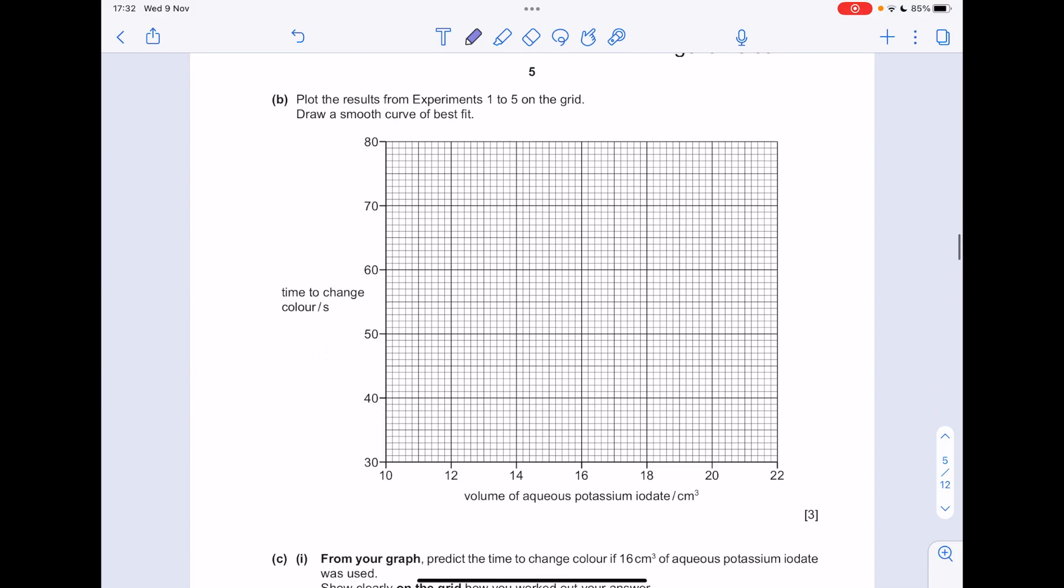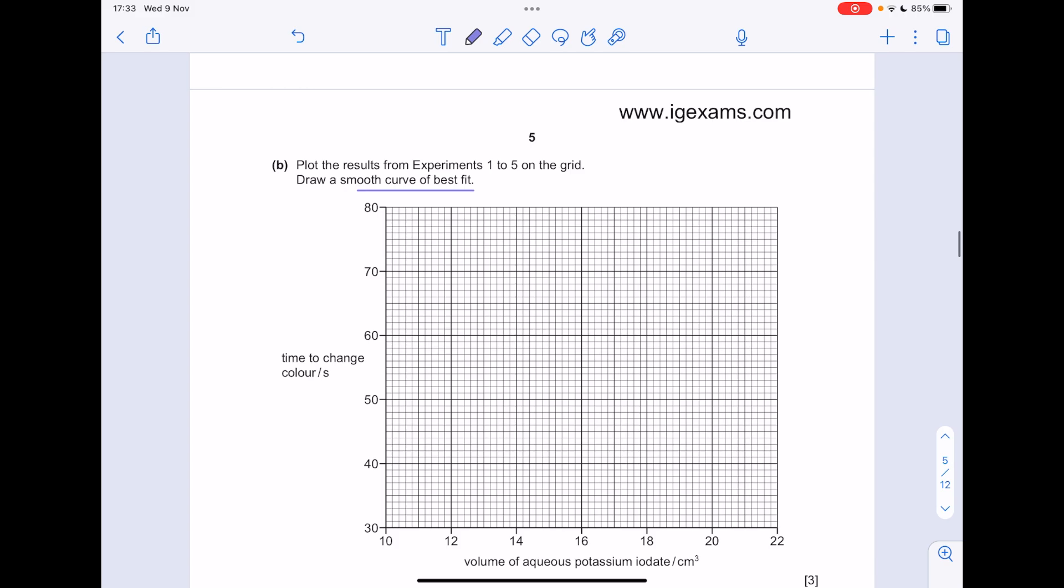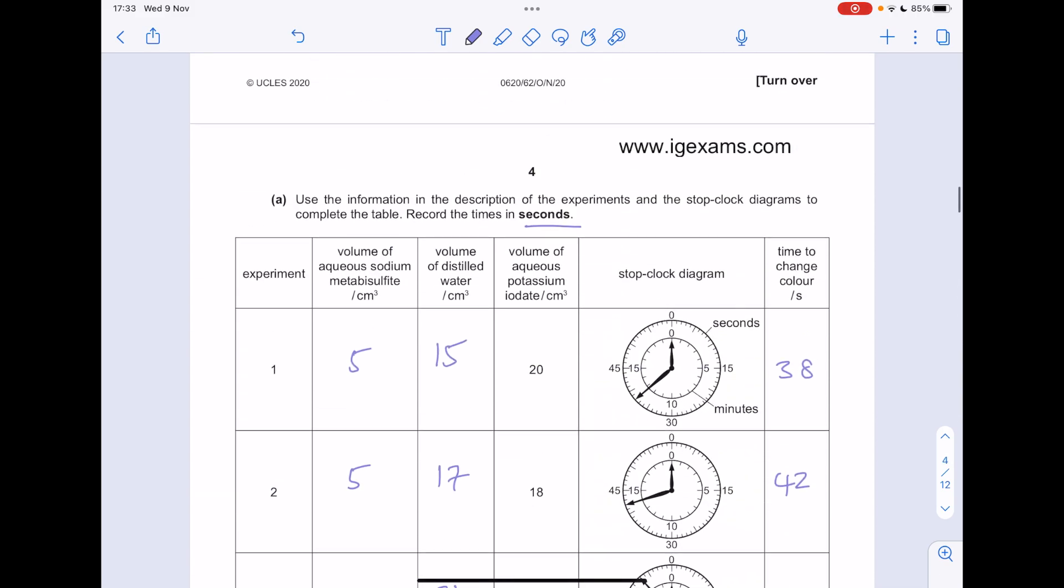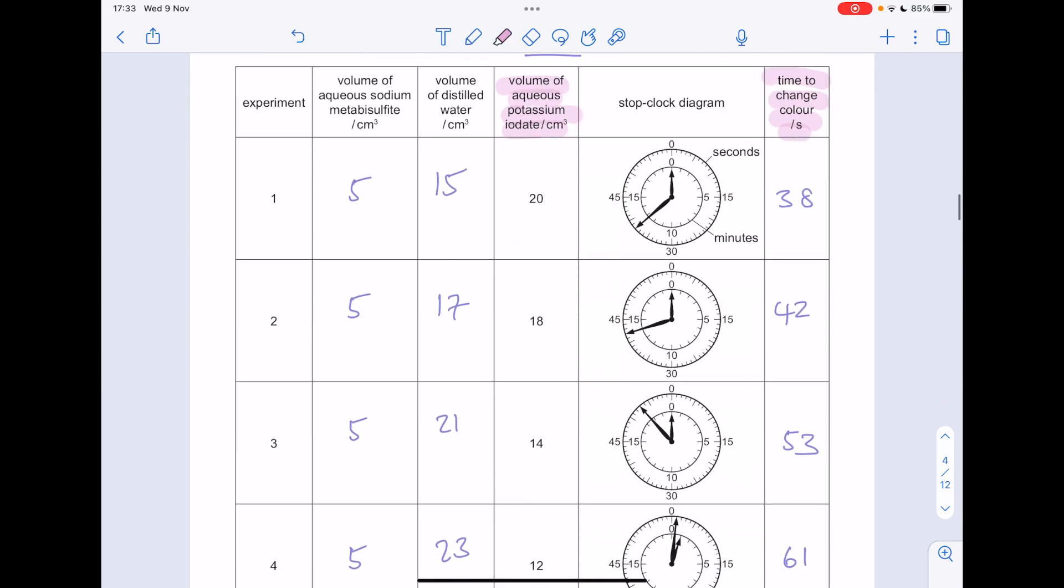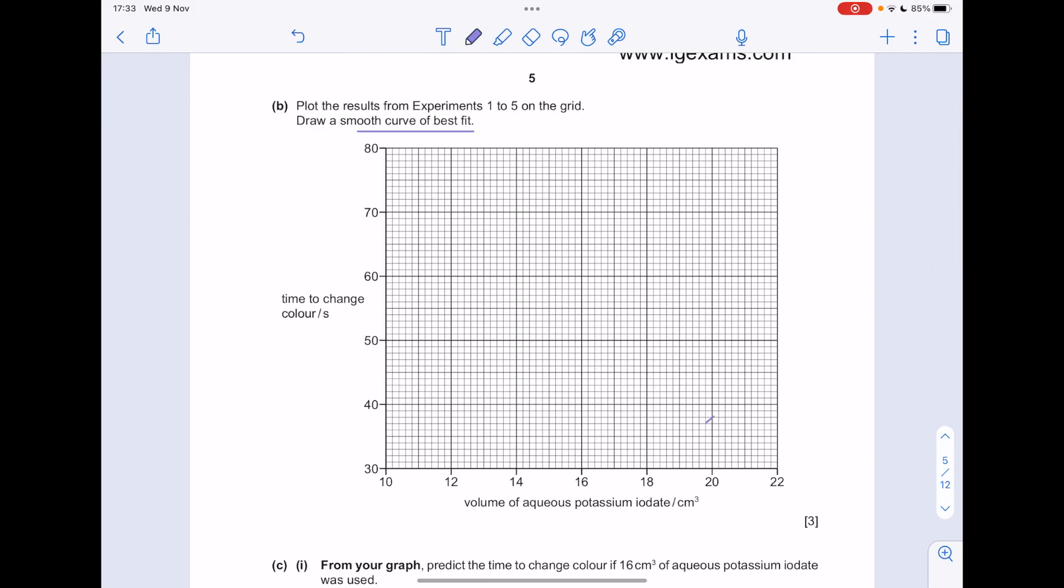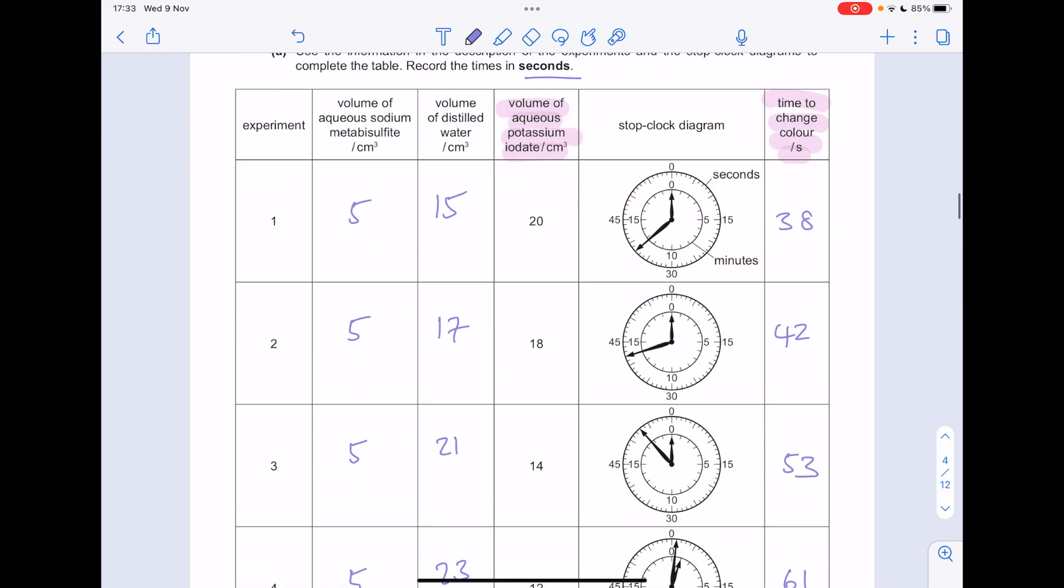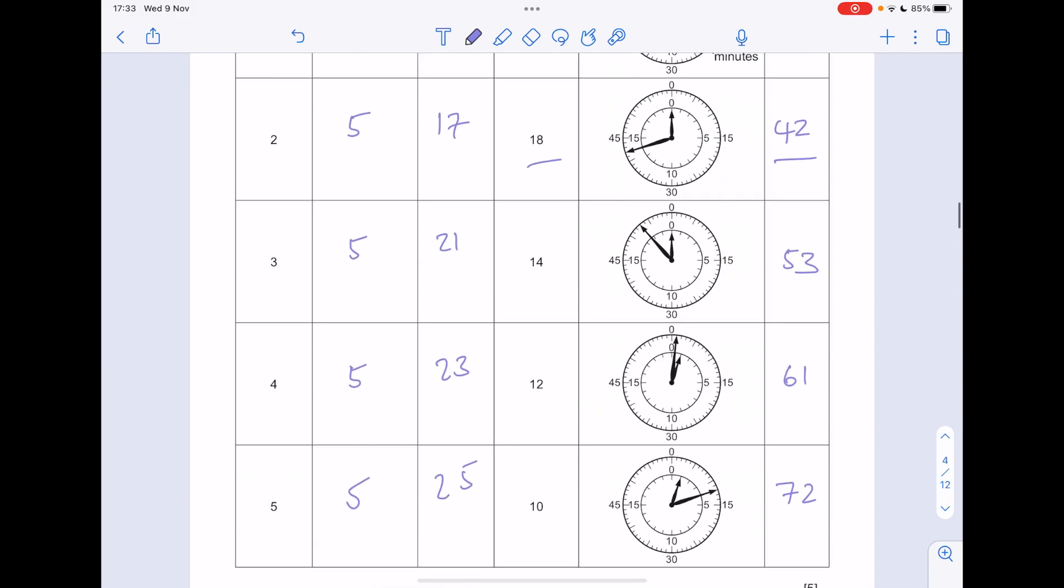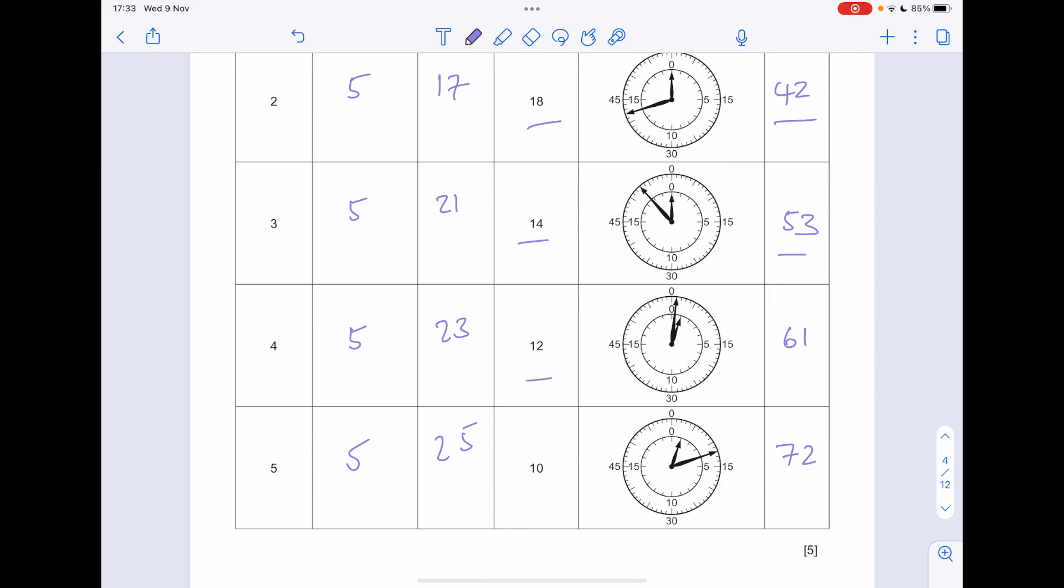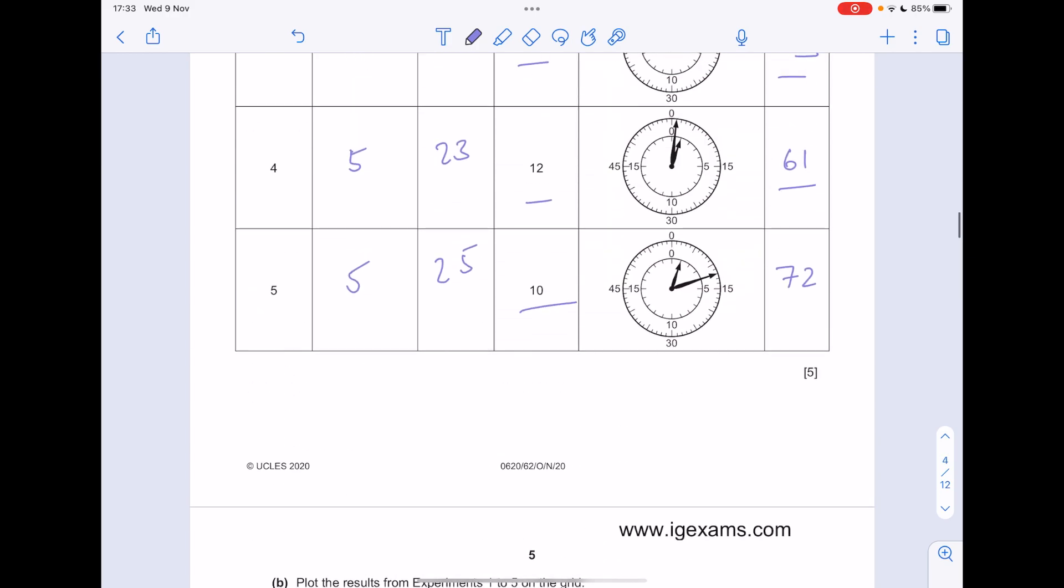Plot the results from experiments 1 to 5 on the grid and draw a smooth curve of best fit. So they've done the axes for us. We're plotting time to change colour versus the aqueous potassium iodate. So make sure you're looking at the right columns. These are the bits of data we need. So the first reading is 20 and the time is 38. So we've done that one. What about this one? 18 and 42. Now 14 and 53. 12 and 61. 10 and 72.